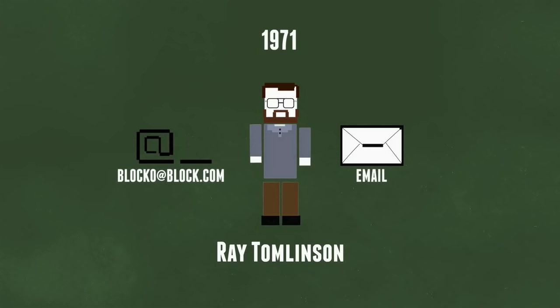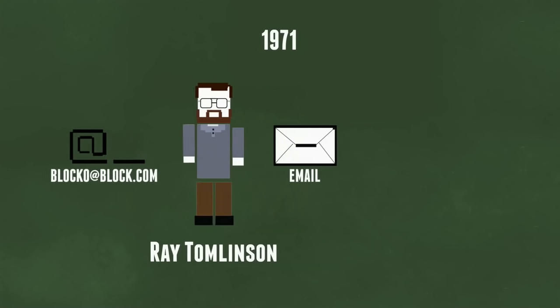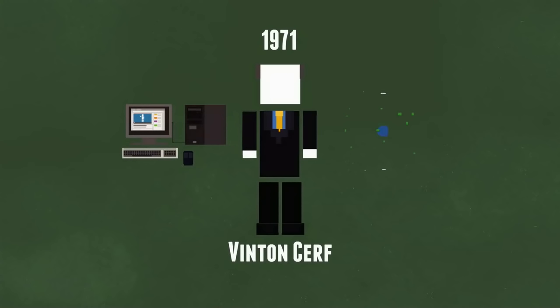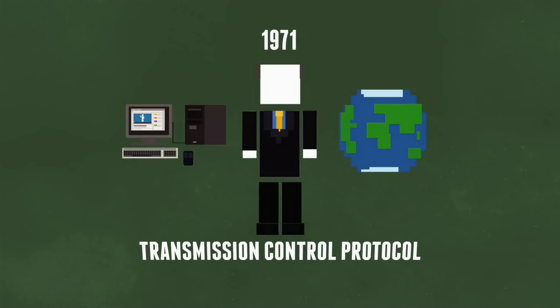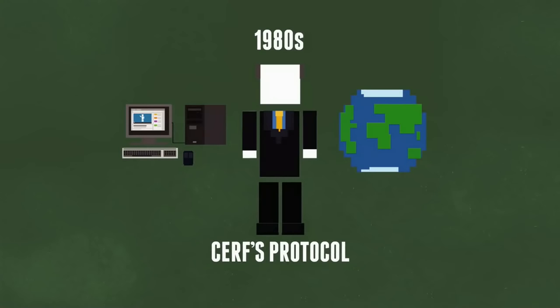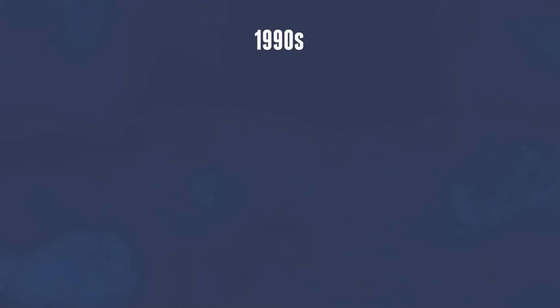With all of the networks floating around, there needed to be a way for all of the computers on them to communicate with other networks. This is where computer scientist named Vinton Cerf comes in. He invented a way to introduce computers across the globe to each other in a virtual space. This invention was called Transmission Control Protocol, or TCP, which was followed by Internet Protocol, or IP. In the 80s, scientists used Cerf's protocol to send data back and forth, but the 90s is where it really all began.